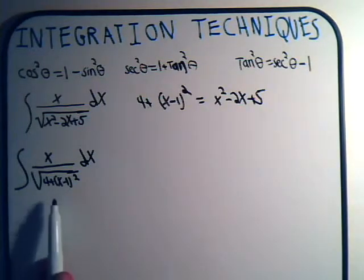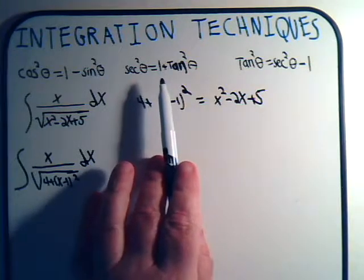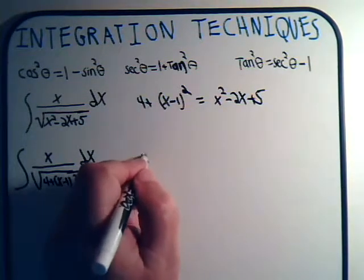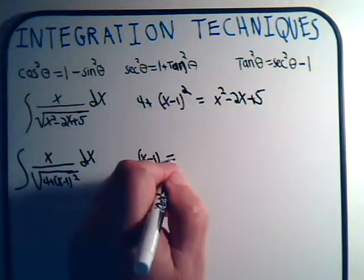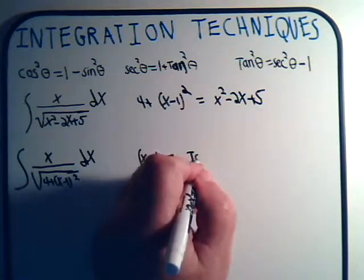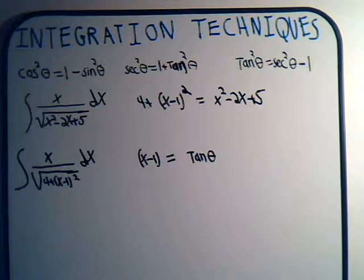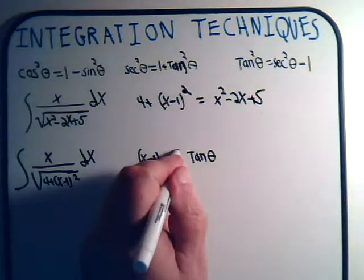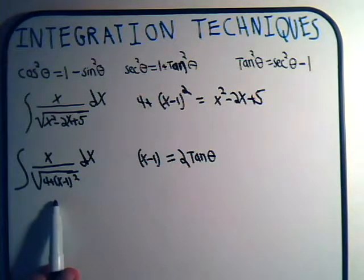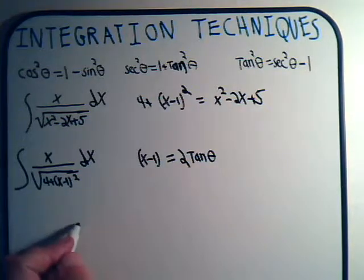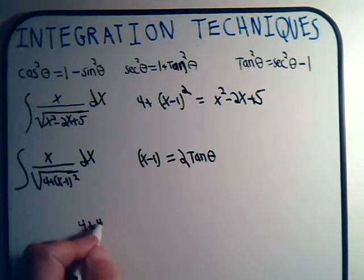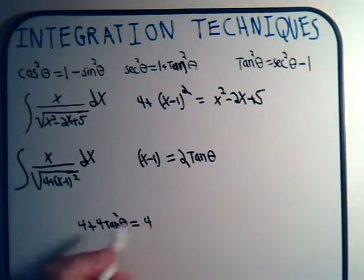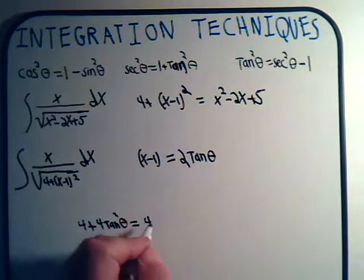Here we have a constant plus a variable squared — that resembles the form: constant plus a variable squared. So we take our variable, x minus 1, and set it equal to 2 times the tangent of theta — the square root of the constant. This square root quantity becomes 4 plus 4 tangent squared theta, which equals 4 times (1 plus tangent squared theta), which is 4 secant squared theta.